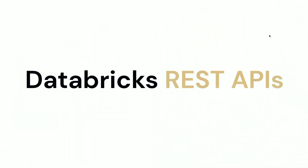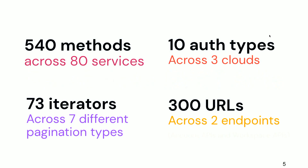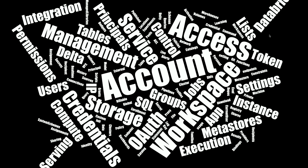This talk is about Databricks SDKs because Databricks APIs — raise your hand if you've used Databricks REST APIs. We have 540 methods across almost 80 different entities, 73 different things to iterate, 300 URLs across workspace and account endpoints, and 10 different authentication types across three clouds. Managing all this — permissions, accounts, workspaces — is a bit difficult to work with because things evolve over time.